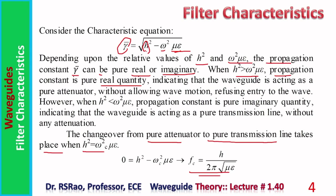When frequency is less than fc, h² > ω²με, γ is pure real, and the guide is a pure attenuator. When frequency is greater than fc, ω²με is large, γ is pure imaginary, so pure unattenuated transmission takes place. Thus fc = h / (2π√με). It is important to note that the characteristic equation γ = √(h² − ω²με) is valid for all three configurations — parallel plate guide, rectangular waveguide, and circular waveguide — so this expression for fc is also valid for all three cases.